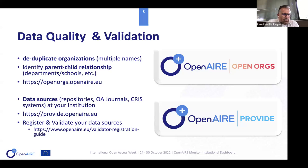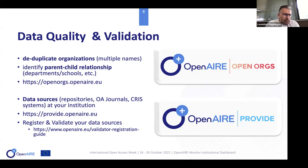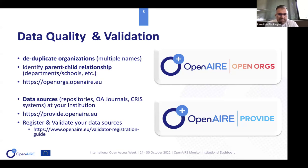The second part of data quality is for OpenAIR to have as much metadata and information as possible from your integrated data sources — repositories, open access journals, and any systems you might have at your institution. This can be accomplished through the OpenAIR Provide dashboard, where you can register and validate these data sources so that OpenAIR can aggregate the metadata and research products from them. You need to comply with the OpenAIR guidelines for registering and validating your data sources.